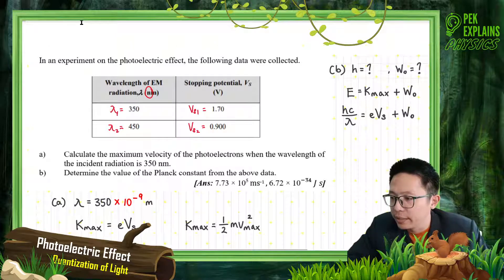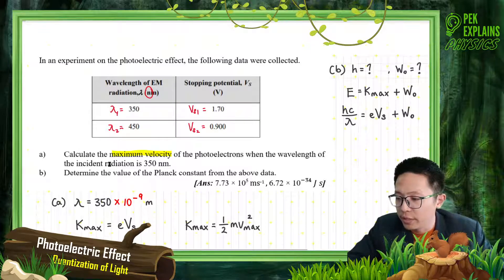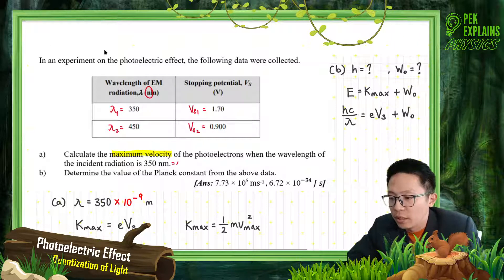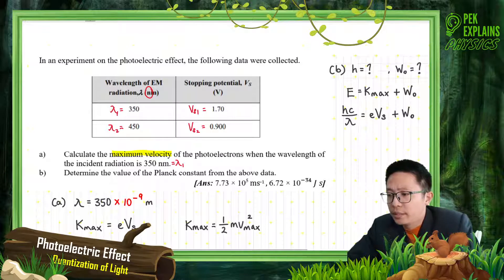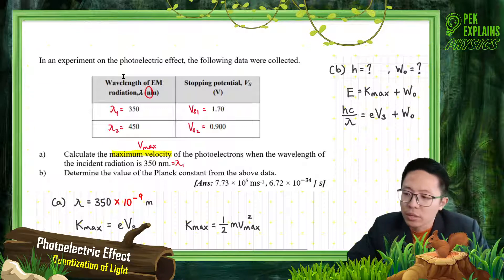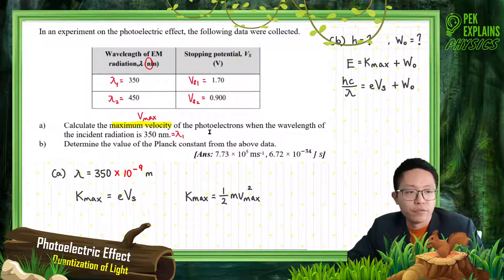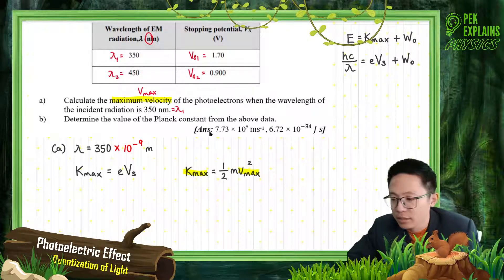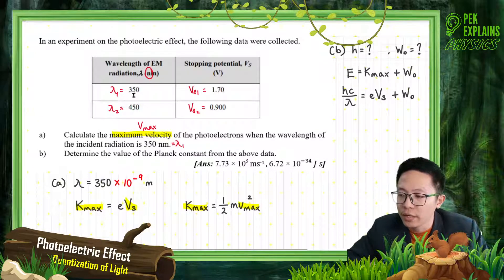Now I want to find the maximum velocity of the photoelectrons when the wavelength of the incident radiation is 350 nanometer, which is the first wavelength, lambda 1. So we use wavelength 1 and we want to find the Vmax. To find Vmax, we need to find the Kmax, which is related to the stopping potential. For 350 nanometer, the stopping potential is 1.7 V.